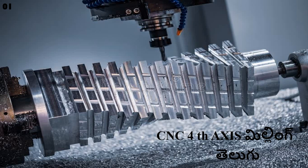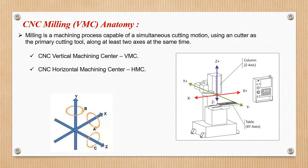Hi friends, welcome to Dr. Funit. This is the introduction of CNC 4-axis milling. CNC 4-axis is the idea that it is actually a VMC attachment for 4-axis — that is one type. The second is the HMC machine, which also has 4-axis. There is a normal 3-axis milling machine.